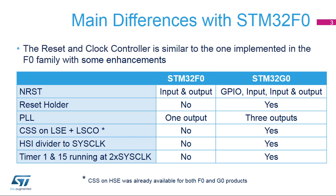HSI SIS is the high-speed internal 16 MHz RC oscillator, or HSI-16, divided by a programmable ratio in the range 1 to 128. PLL Q-Clock is selectable for high-speed TIM1 and TIM15 timers. Its frequency must be set so as not to exceed 128 MHz, which is twice the maximum frequency of the Cortex-M0+.